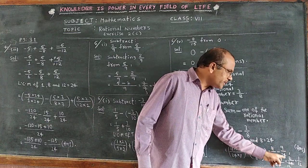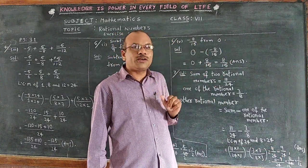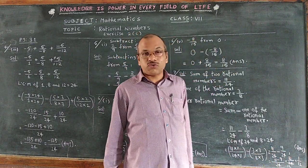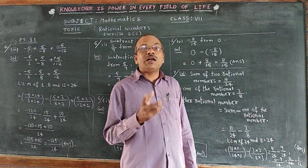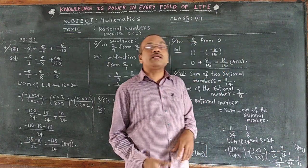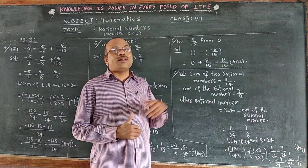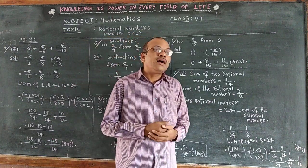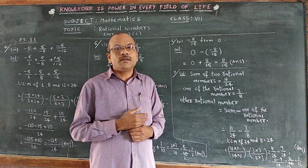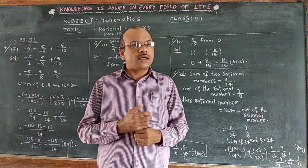With the common denominator 24, we calculate 11 minus 9 equals 2. So we get 2 by 24. We can simplify by cancelling the common factor 2: 2 by 24 simplifies to 1 by 12. That 1 by 12 is the other rational number. This is the process. I hope things are very clear for you. We will meet in the next class.